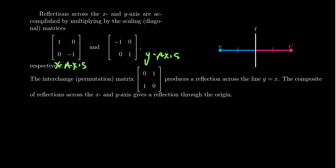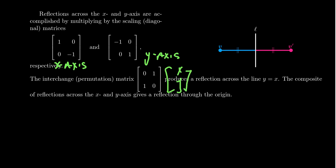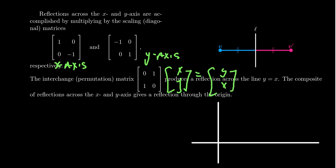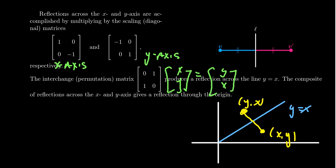There's a third type of reflection: using the interchange matrix [0, 1; 1, 0], which is the only permutation matrix for 2×2 matrices. Multiplying this by the vector (x, y) gives (y, x) — it swaps the coordinates. Geometrically, this is a reflection across the diagonal line y = x, because reflecting a point (x, y) across that line switches its x and y coordinates.